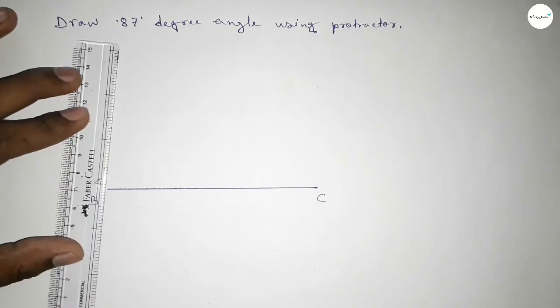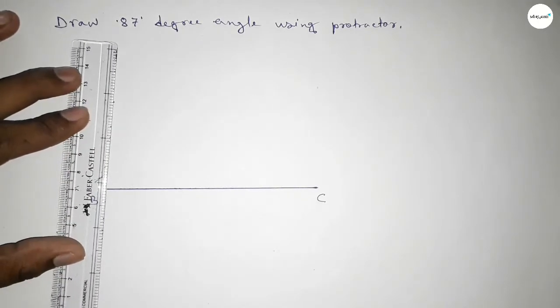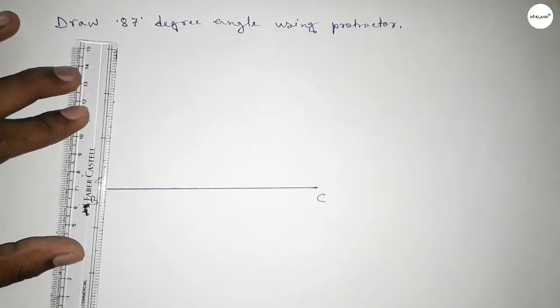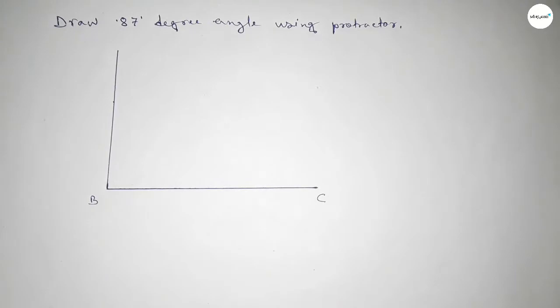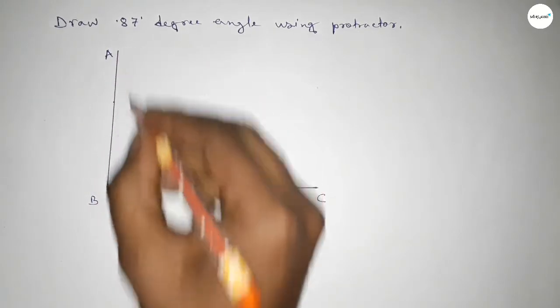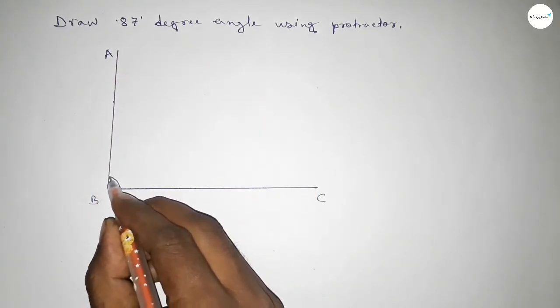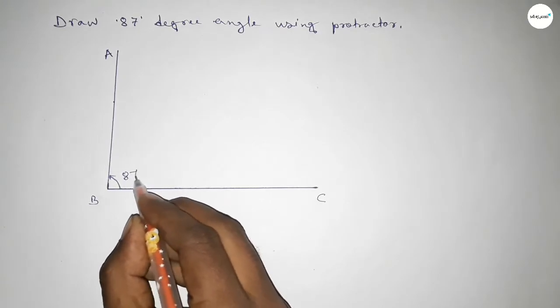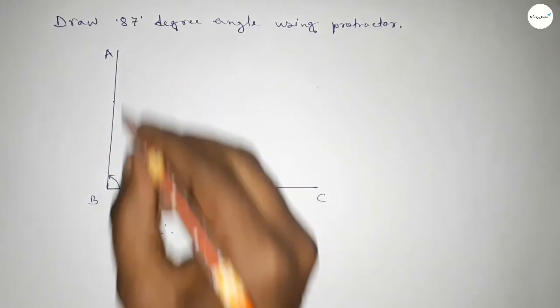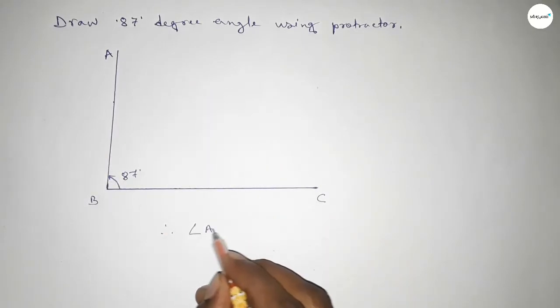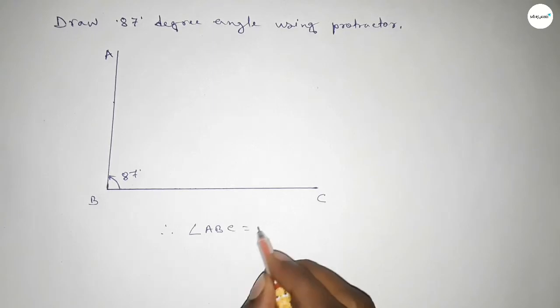Now joining the side to get the 87-degree angle. So joining this one and taking point A here. Angle ABC is 87 degrees. Therefore, angle ABC equals 87 degrees.